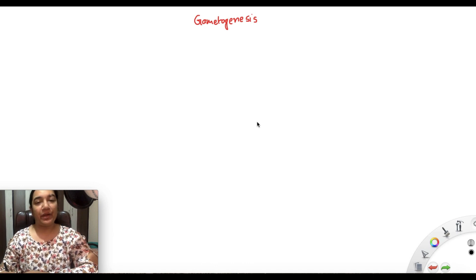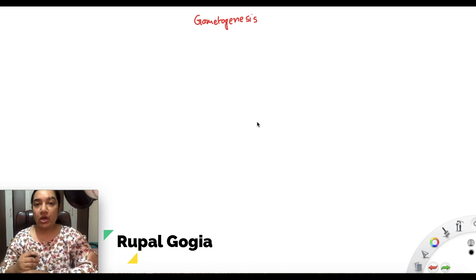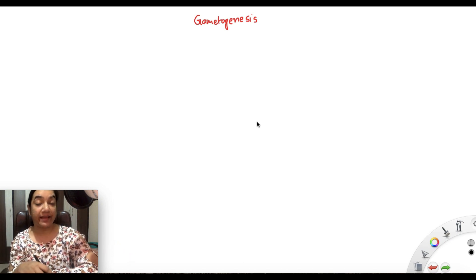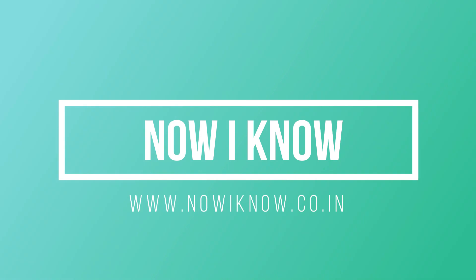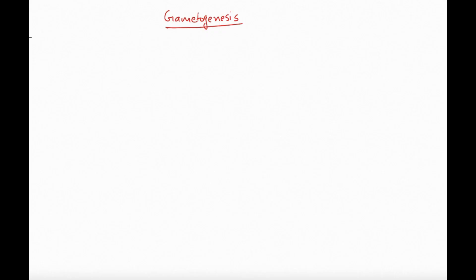Hello everyone, welcome back. I am Rupal and today we are talking about gametogenesis, that is the formation of gametes. In this video we will talk about spermatogenesis and in the next video we will cover oogenesis. So first things first: what is gametogenesis? Gametogenesis is nothing but formation of gametes — in case of male it will be sperm and in case of female it will be ovum.